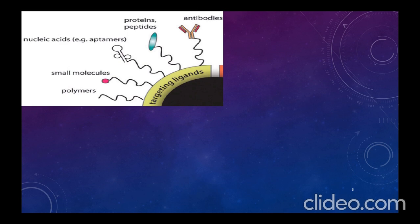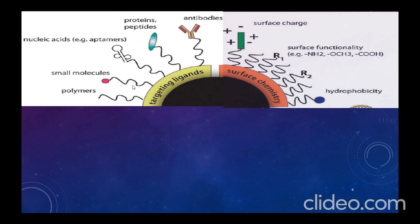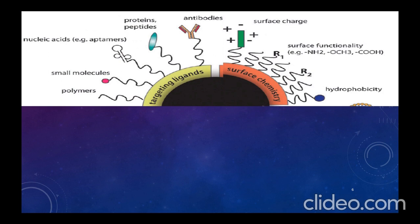Regarding the properties of nanoparticles: in terms of targeting ligands, nanoparticles can target polymers, small molecules, nucleic acids, protein peptides, and antibodies. For surface charge, the surface chemistry of nanoparticles can be positive or negative depending on the material used. Nanoparticles may also have surface functionality depending on the functional group attached — such as NH₂, OCH₃, or carboxylic acid — making them hydrophobic or hydrophilic.